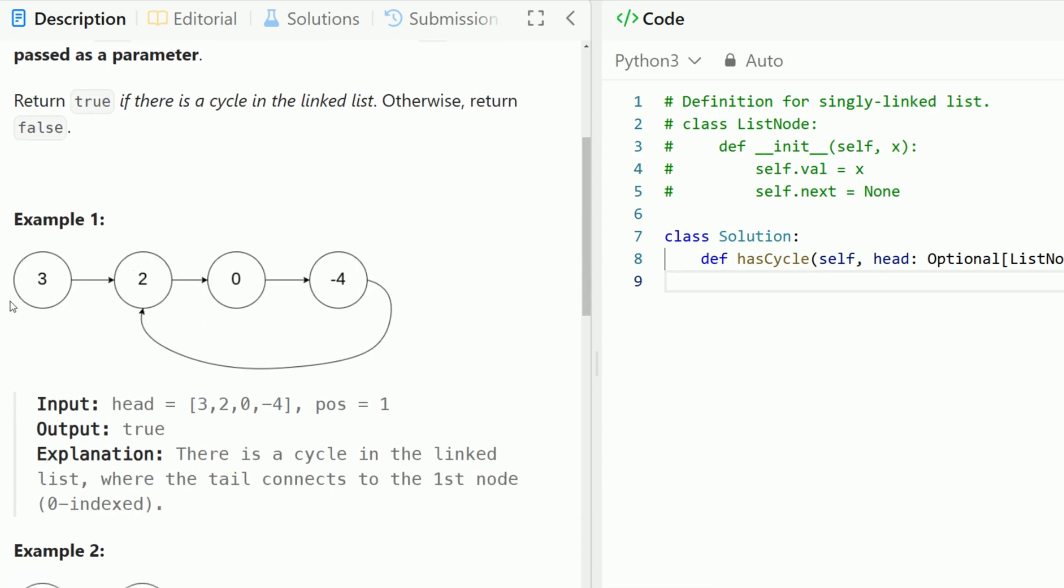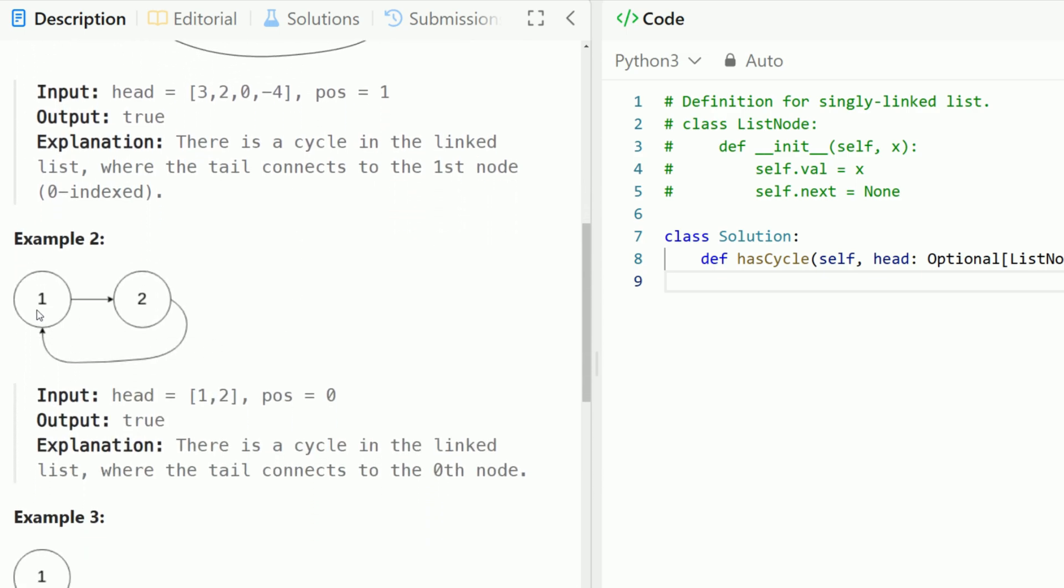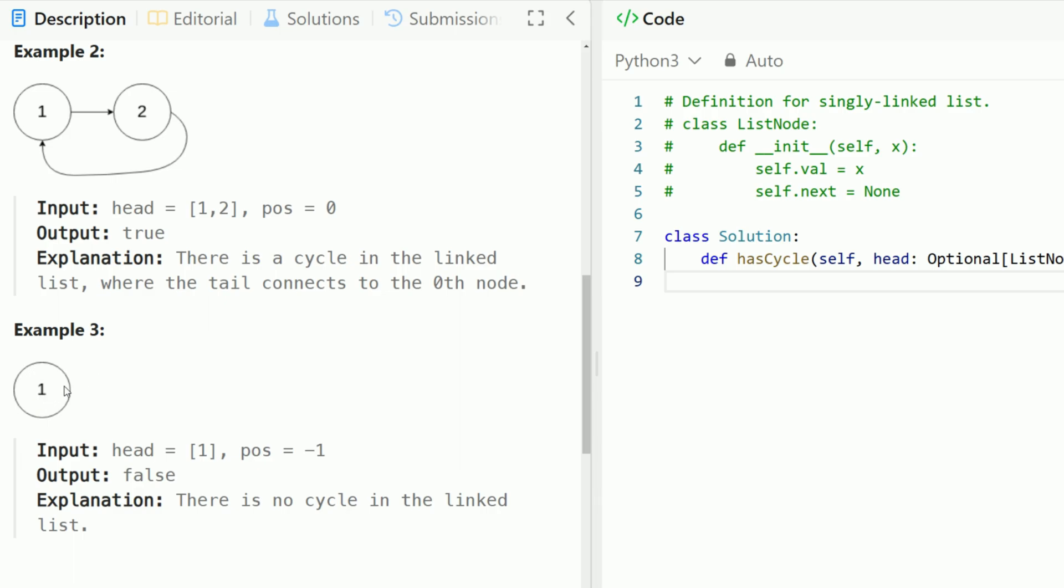If we take a look at this example, three, two, zero, negative four - negative four points back to node two, so this has a cycle in the linked list. This example also has a cycle, two points back to one, but in this case there is no cycle.